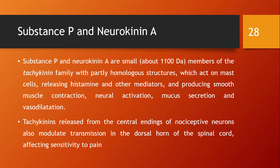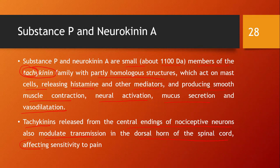Substance P and neurokinin A are small peptides (about 1100 daltons) and are members of the tachykinin family (tachy = fast), with partly homologous structures. They act on mast cells, releasing histamine and other mediators, and producing smooth muscle contraction, neural activation, and mucus secretion. Tachykinin release from the central endings of nociceptive neurons also modulates transmission in the dorsal horn of the spinal cord, affecting sensitivity to pain.